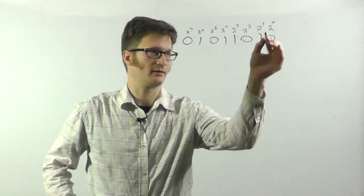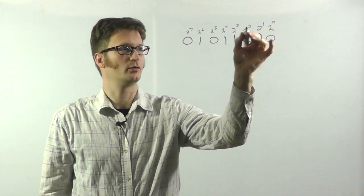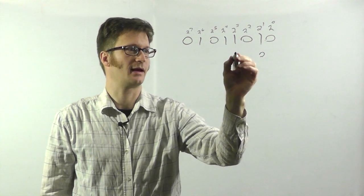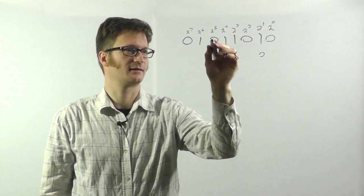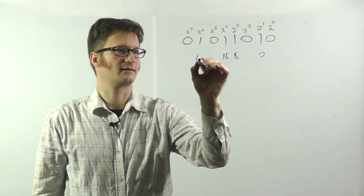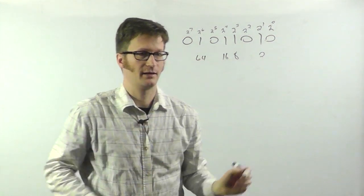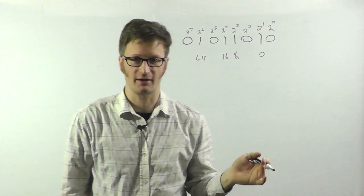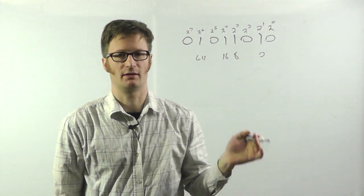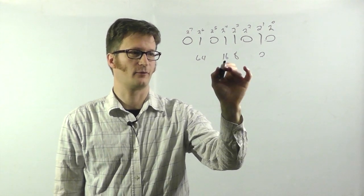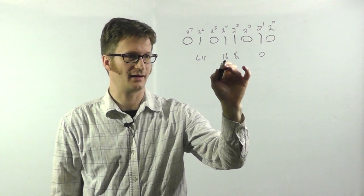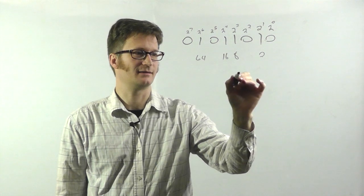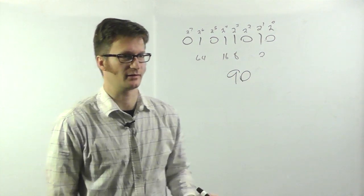Alright, so this represents 1, 2, 4, 8, 16, 32, 64. If I take this binary number and convert it into decimal, 64 plus 16 is 80, plus 8 is 88, plus 2 is 90. This is the value here.